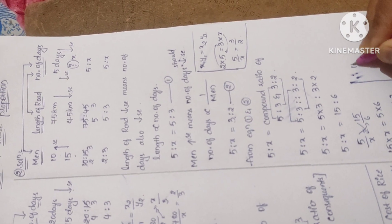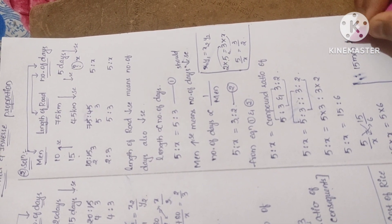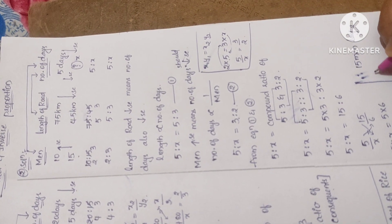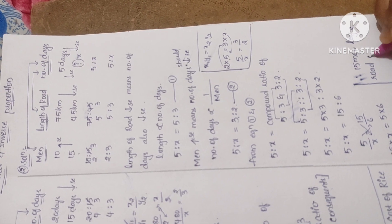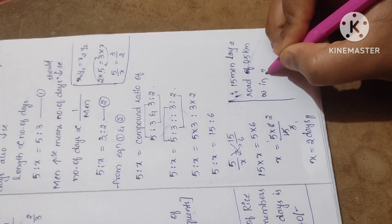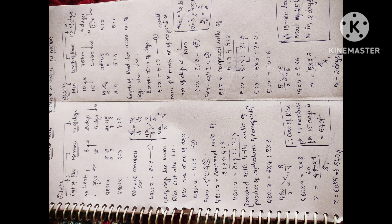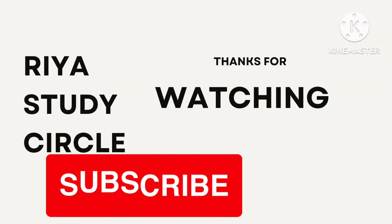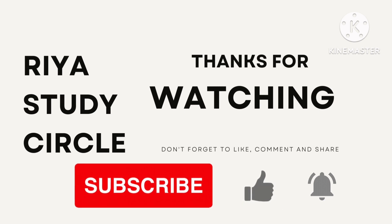Therefore, 15 men can lay a road of 45 kilometers in 2 days. All problems in Exercise 10.4 are solved this way. For shortcut methods useful for exams and objective questions, I will upload those in my Shorts. I hope this video is helpful. Comment below for any doubts. Visit the playlist on my channel to find all videos easily. Thank you for watching - please like, share, subscribe, and click the bell icon.